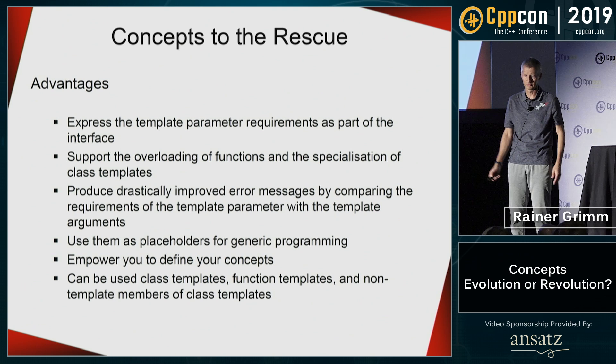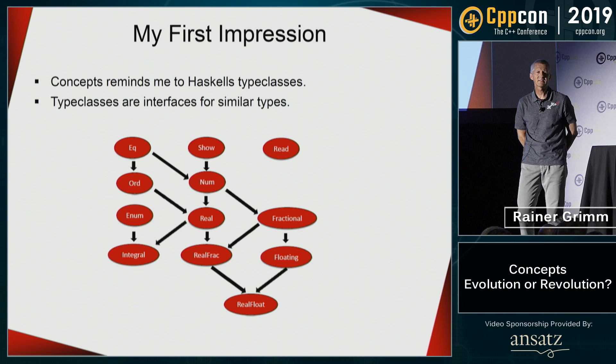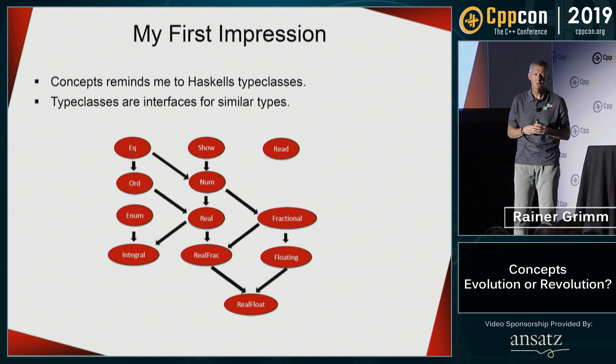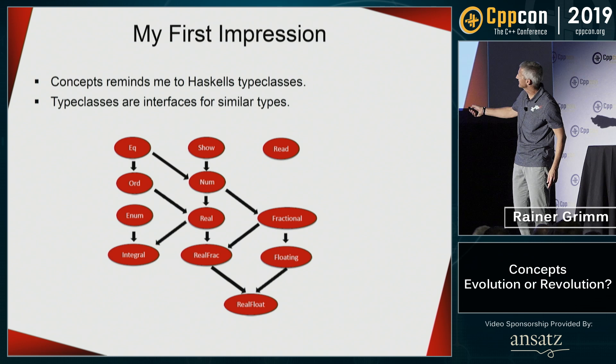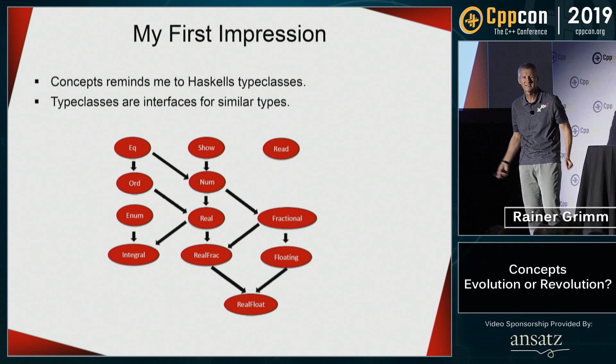A little bit about the long history of concepts. My first impression when I recognized we had something like concepts — around 2025-2026, I'm not sure — was that they reminded me of Haskell type classes. This is a hierarchy of Haskell type classes, and in particular you can see that to support ordering, you have to support equality first, which is extremely elegant. The question is: can I do something similar with concepts?